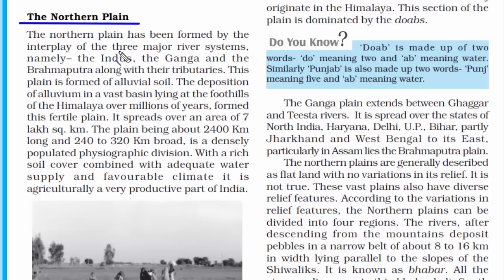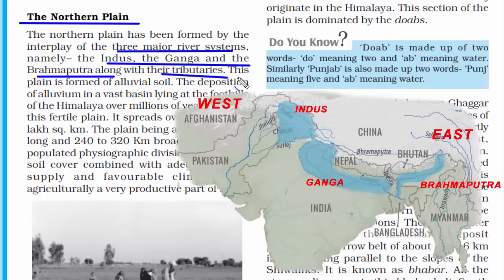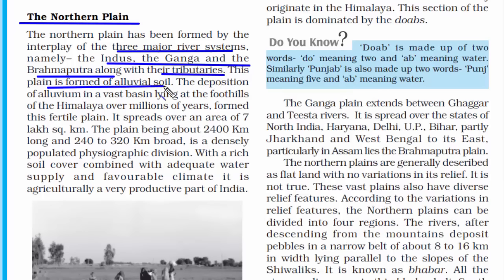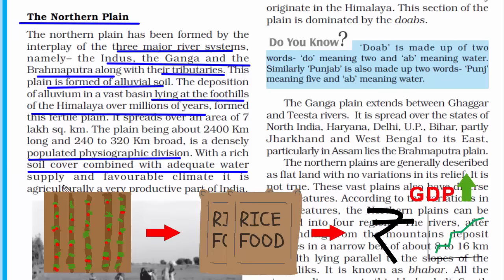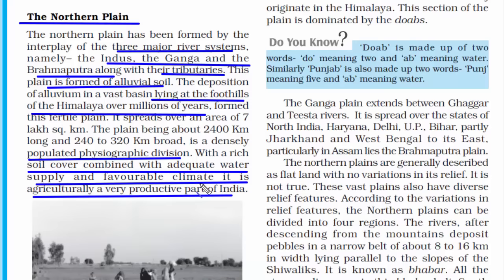The Northern Plain has been formed by three major river systems — the Indus, the Ganga, and the Brahmaputra, along with their tributaries — depositing alluvial soil at the foothills of the Himalayas over millions of years. It is densely populated because of fertile soil, adequate water supply, and favorable climate. Rivers bring rich soil cover as they flow, making the region ideal for agriculture, which leads to food production, adding value to the economy and making it the most productive part of India.